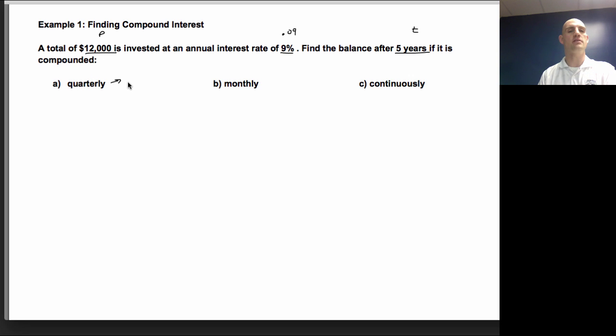Quarterly means n equals 4. And so what I'm looking at is, I'm looking at how do I put all these things together into an equation. So I'm going to start with my equation, A equals. And because it's not continuously, I know that I'm just going to lay out my n compounds per year formula, plus r over n to the nt.